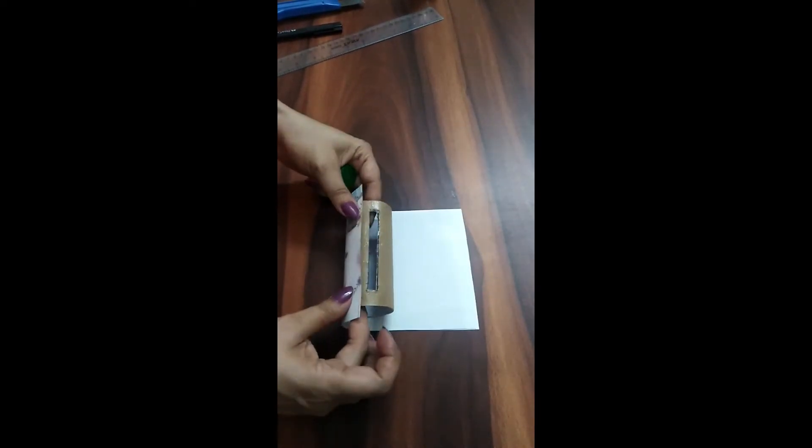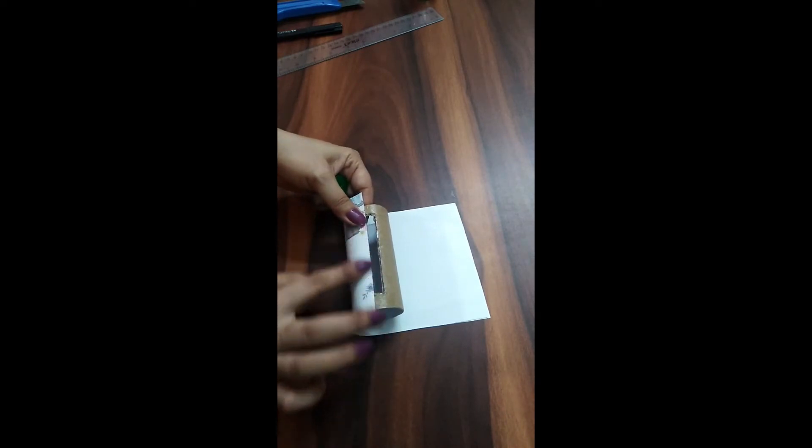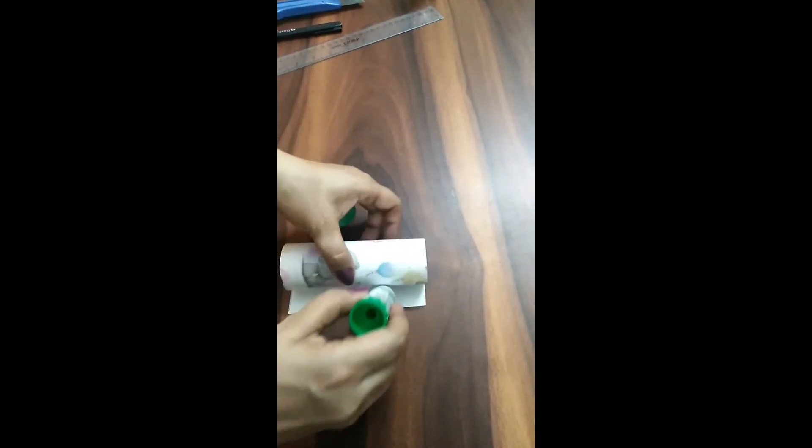So I can put one end of the sheet along this particular line of the slit and then keep on pasting it till the other end of the sheet.